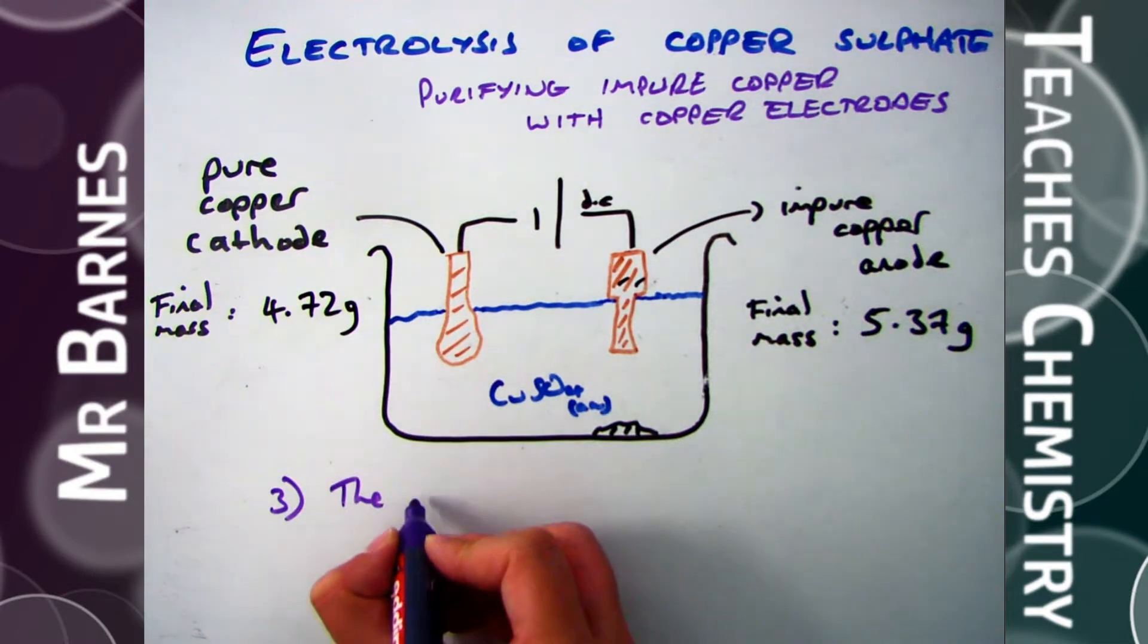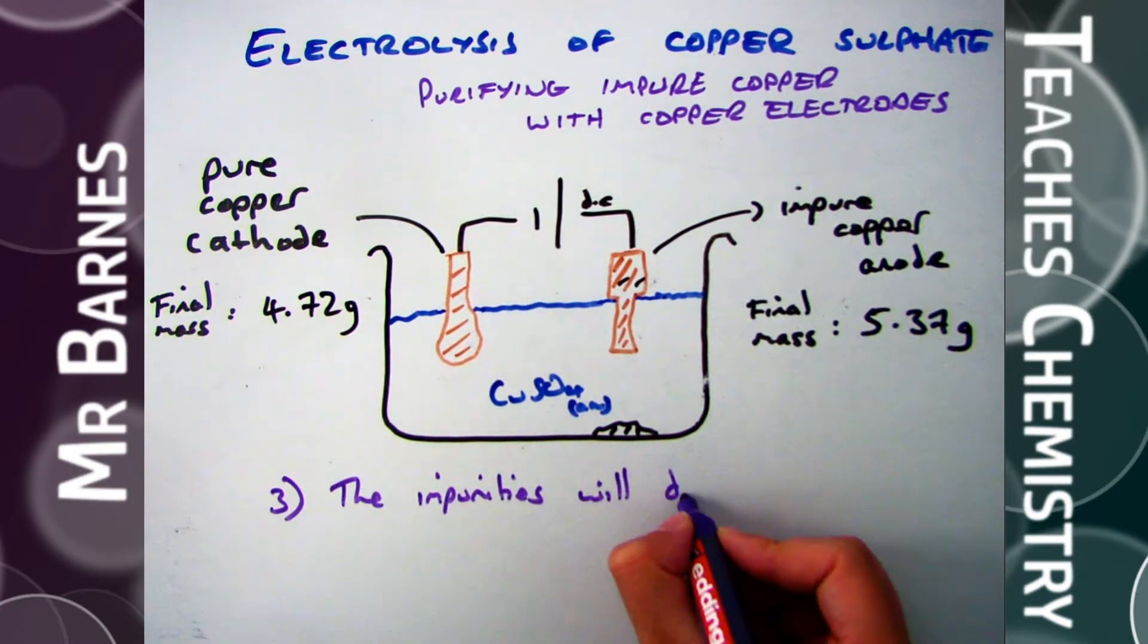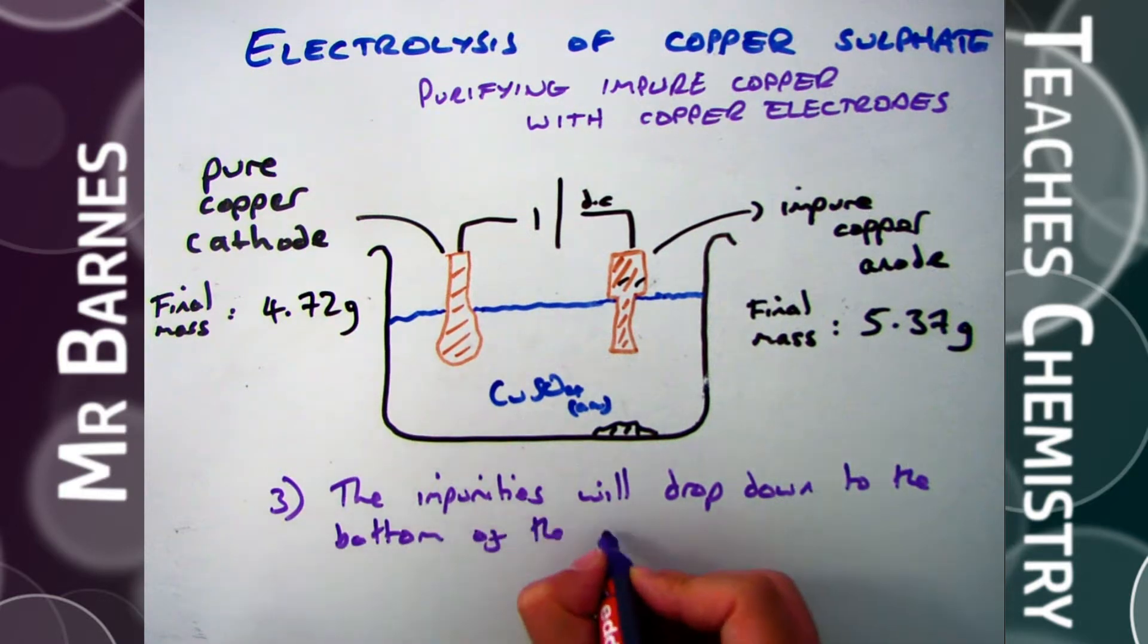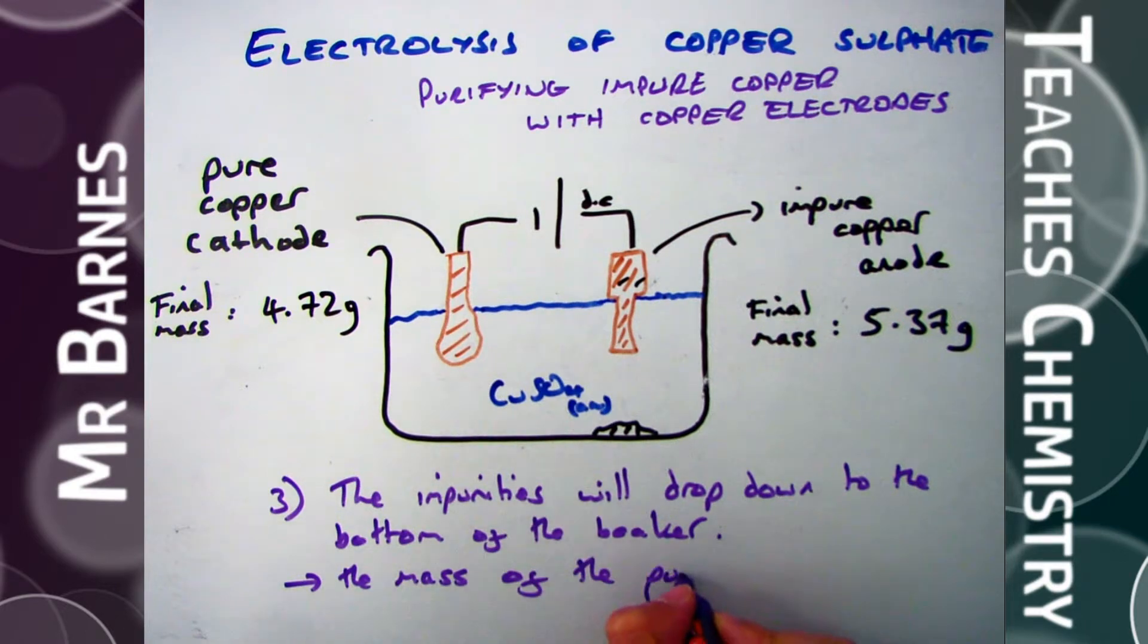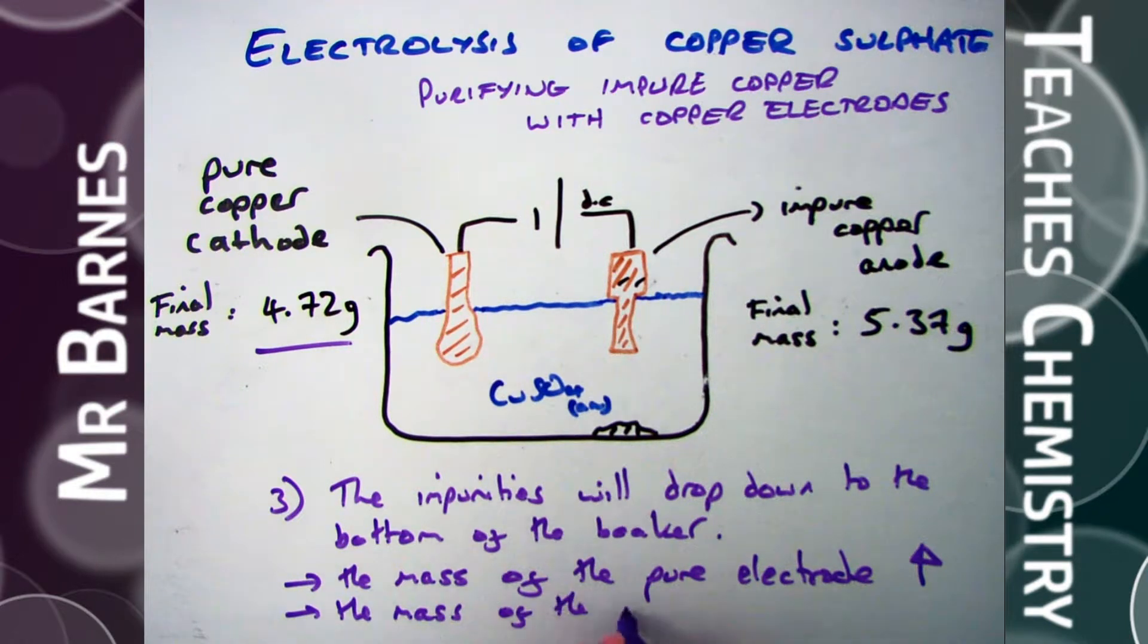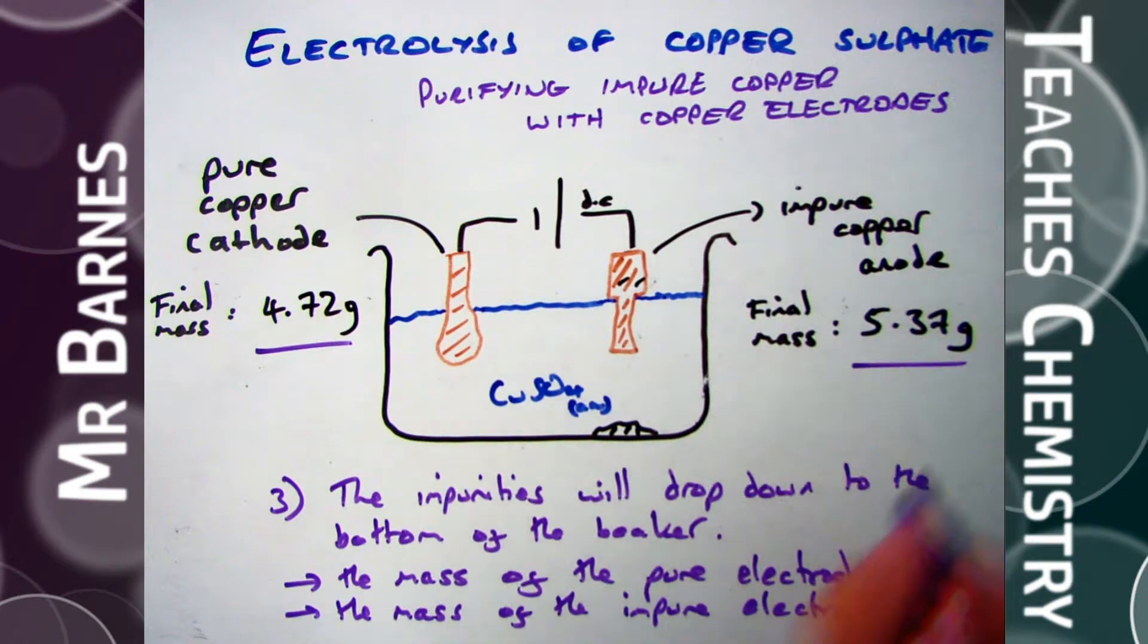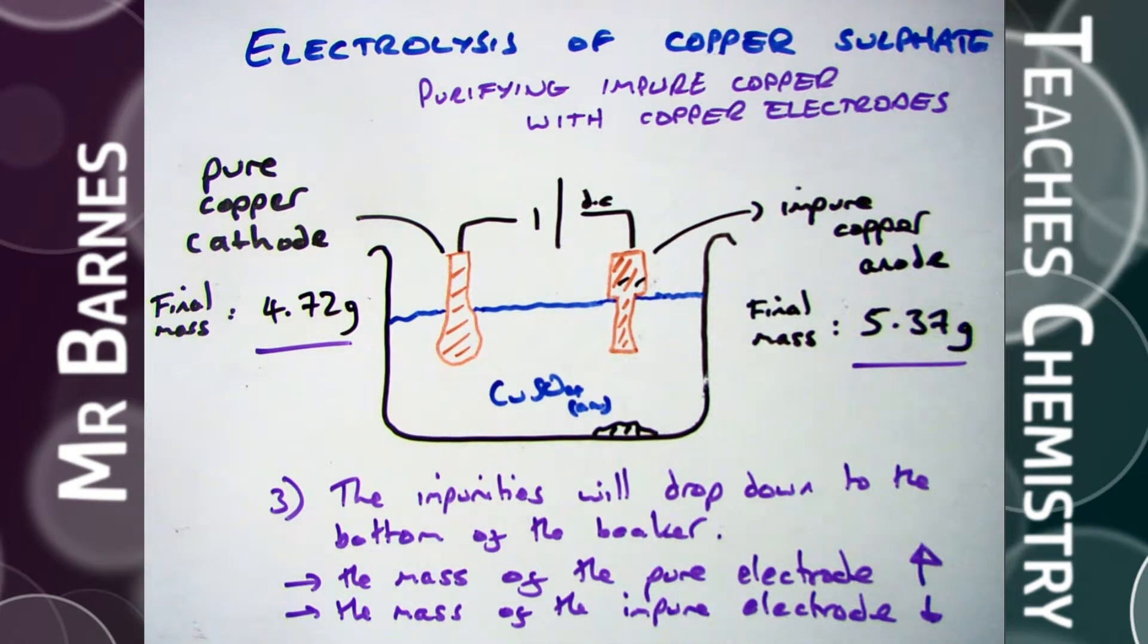As this process occurs, the impurities on the copper anode will start to fall off and they'll form at the bottom of the beaker. This is called sludge. The mass of the cathode will increase because it's got the copper being coated onto it and the mass of the impure copper anode will decrease. And the reason that the change in mass is not exactly the same is because the impurities account for that difference.